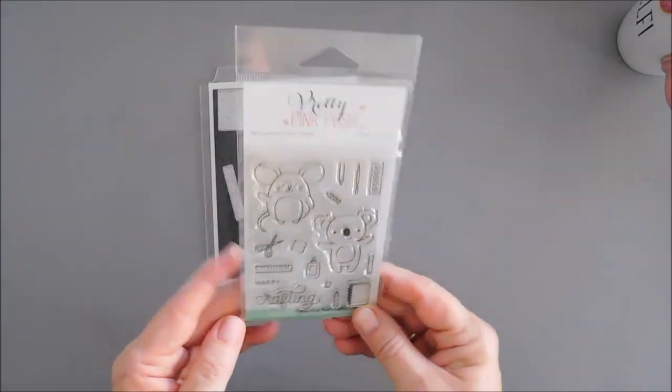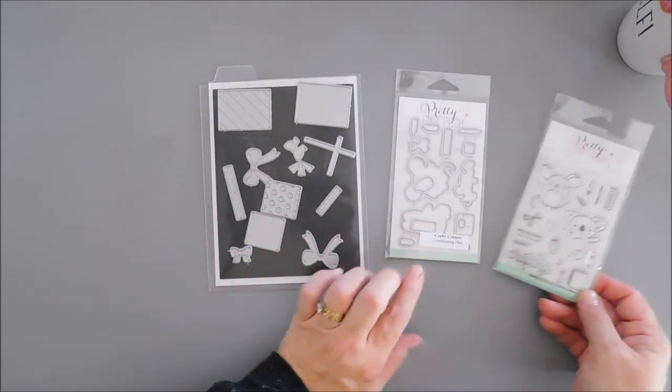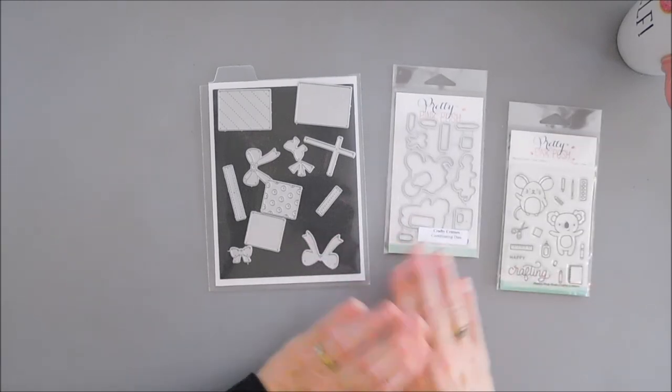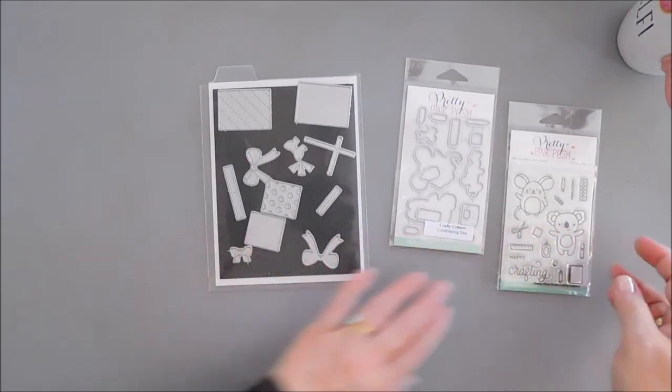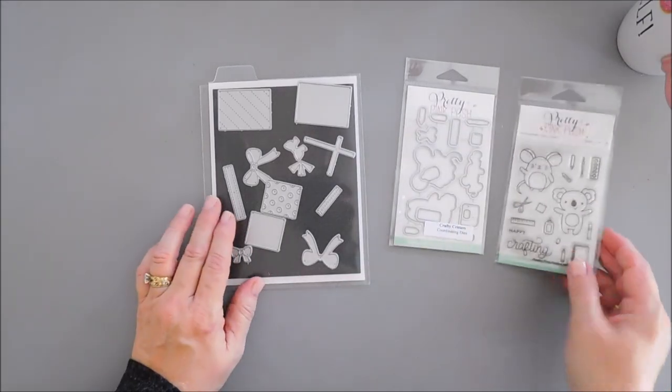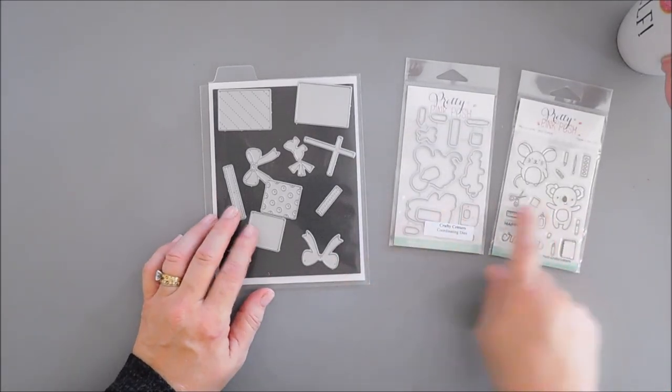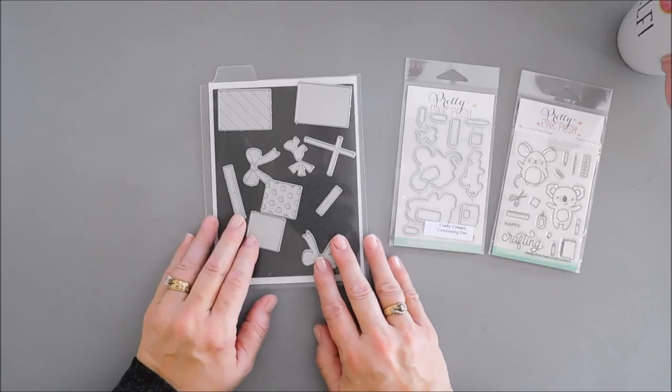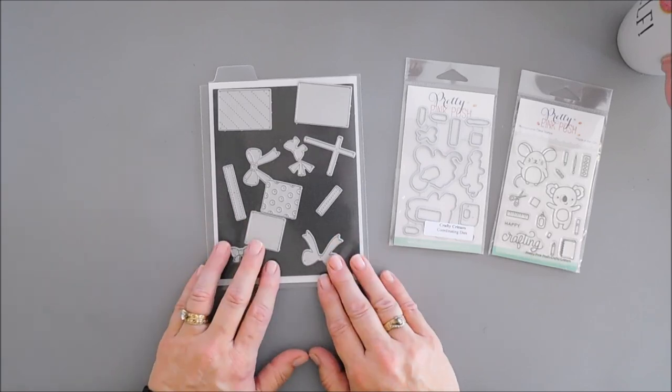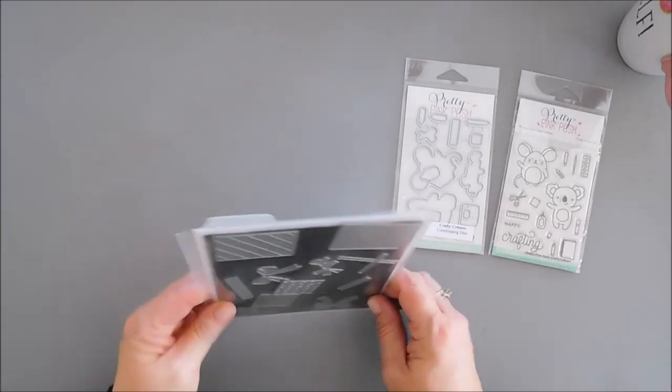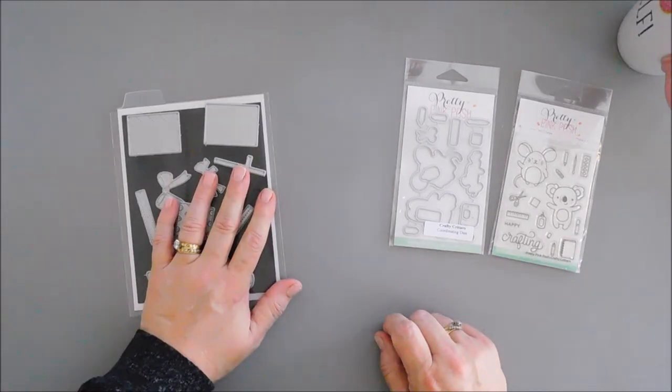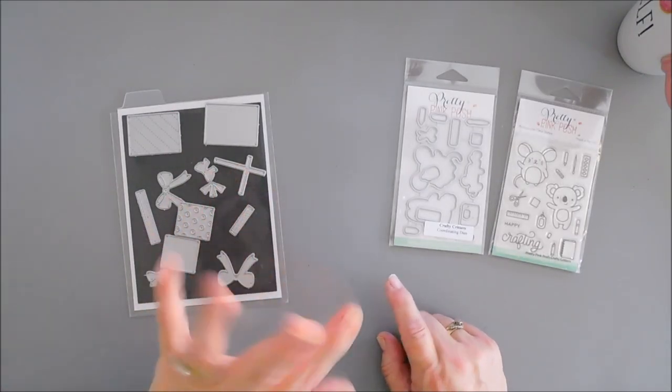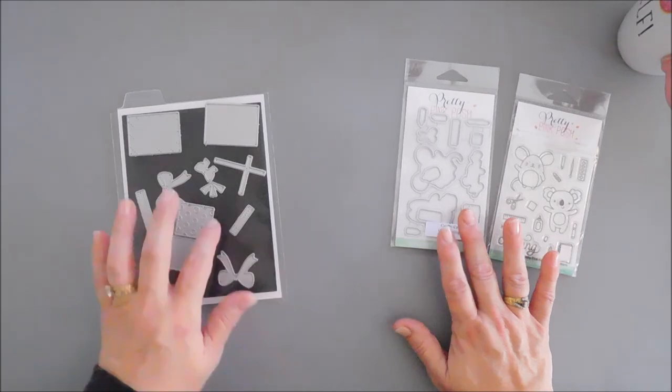It'd be great for school supplies too, but we're going to use this along with the coordinating Crafty Critters die, and then I thought it would be fun to have one of these Crafty Critters coming out of a present. So we are going to be using the Build a Gift die set from Pretty Pink Posh also.